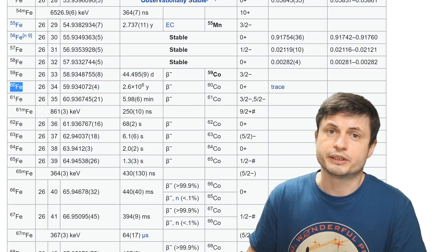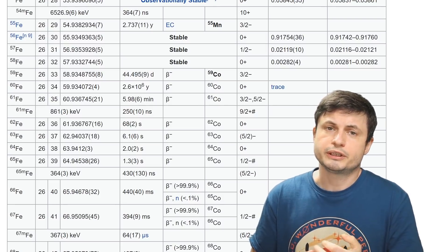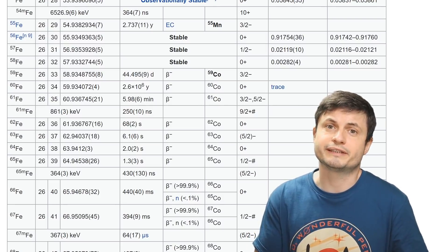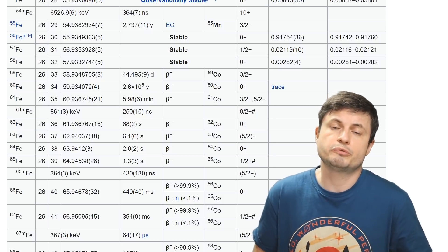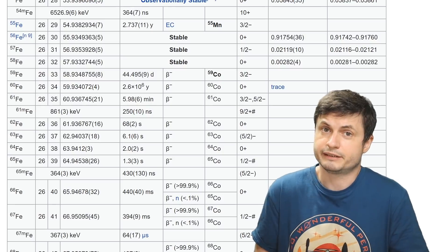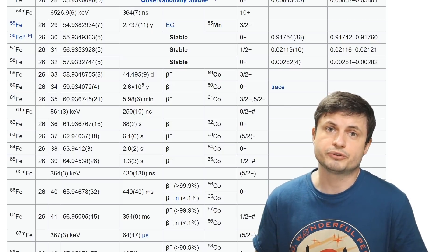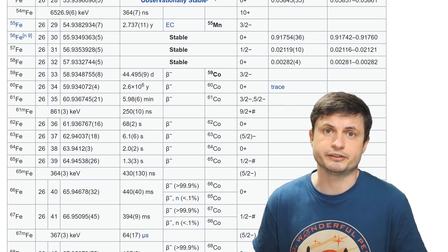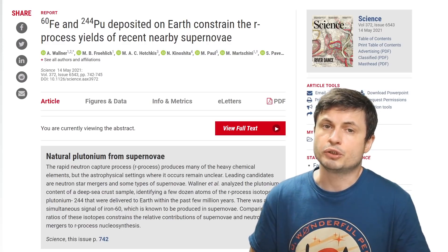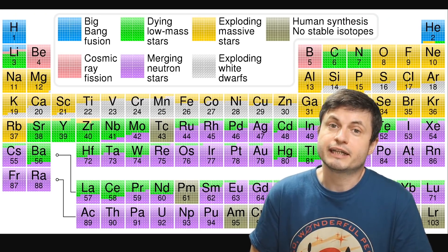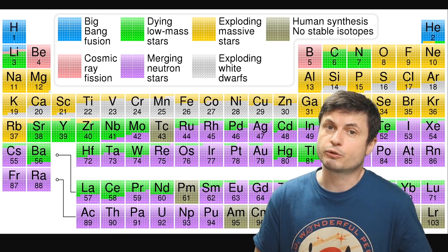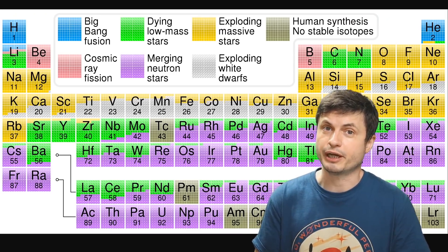The isotope of iron known as iron-60 usually has a half-life of about 2.6 million years, meaning within only 10 million years there really should be almost nothing left. Yet pretty large amounts of iron-60 were discovered in these deposits. But they also discovered a much more interesting isotope known as plutonium-244, which requires quite a lot of different things to happen for it to form.